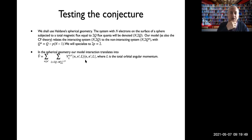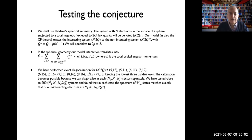Exact diagonalization was performed for many different systems, keeping the lowest three Landau levels. The full Hilbert space is prohibitively large, but calculations can still be performed by diagonalizing in each N0, N1, N2 sector separately, where N0, N1, N2 are the numbers of electrons in the three lowest Landau levels. Close to 200 systems were tested, and in each case the spectrum of V-infinity states matches exactly that of non-interacting electrons at the corresponding effective flux.